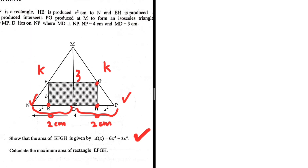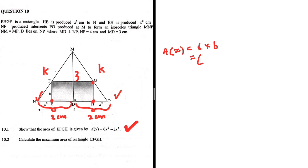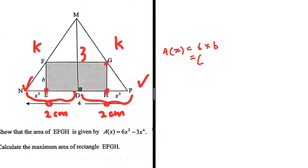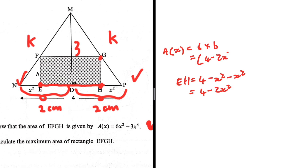We want the area of EFGH in terms of x, which equals length multiplied by breadth. The length is EH. EH equals the total length NP (which is 4) minus x² for NE and minus x² for HP. So EH = 4 - 2x².